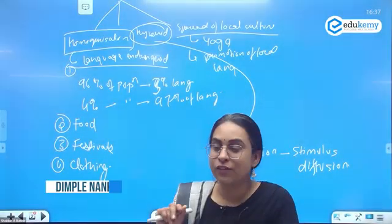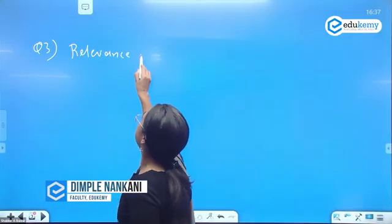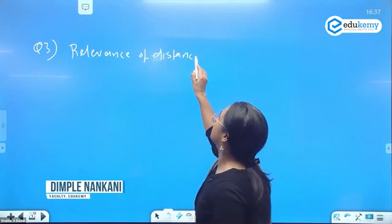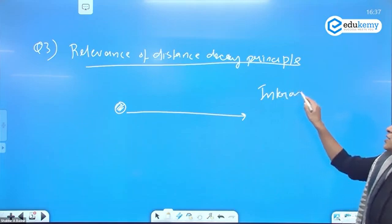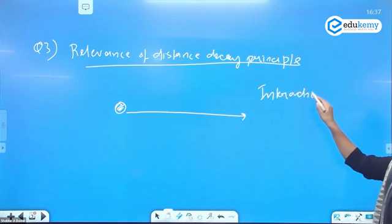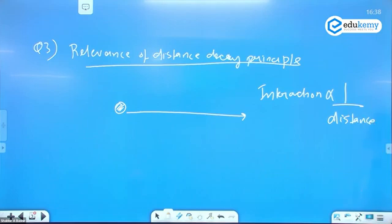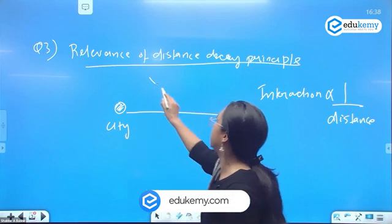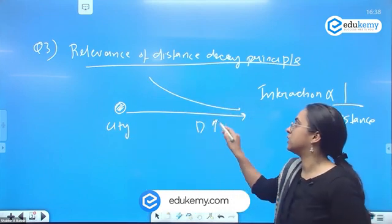Write a short note on the relevance of the distance decay principle. What is the distance decay principle? Interaction is inversely proportional to distance. If this is the main city, the interaction will reduce as the distance increases.